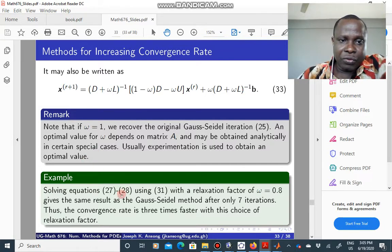Now, if we solve the same problem and choose a relaxation factor of 0.8, you realize that the SOR method will give you the same solution but with only 7 iterations.